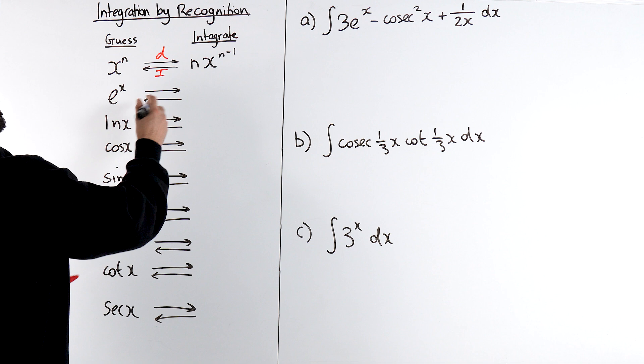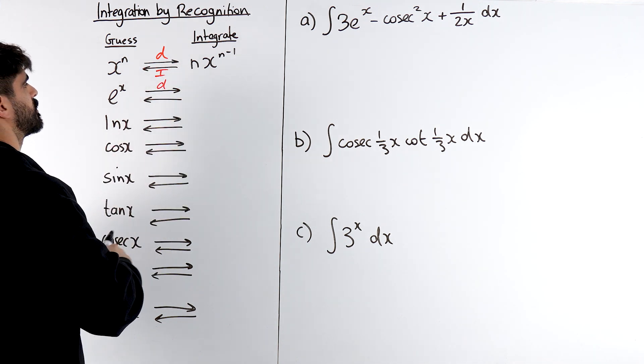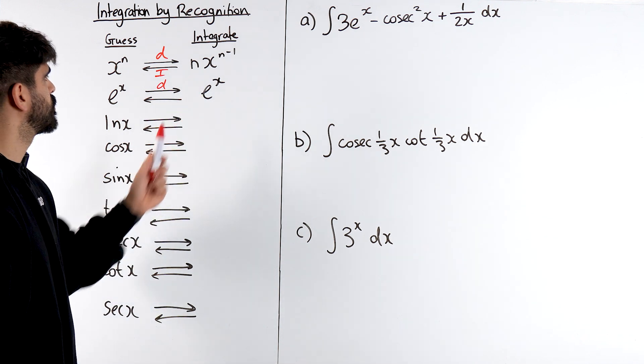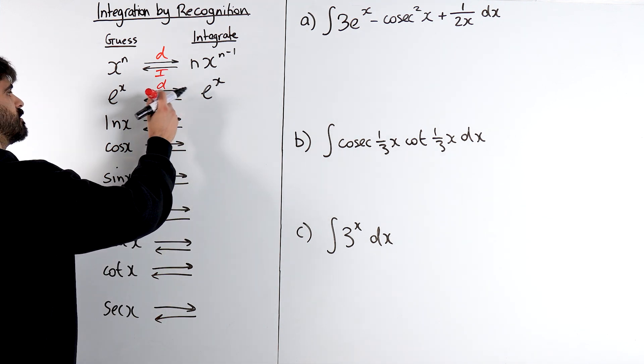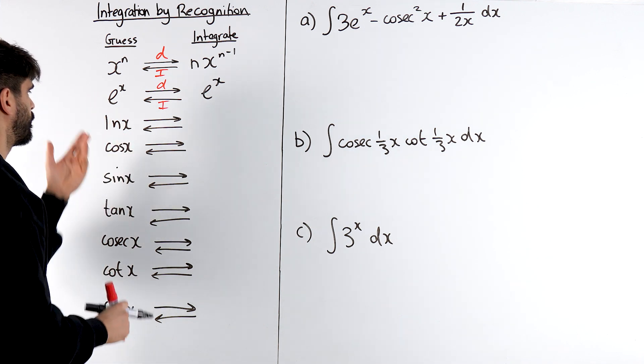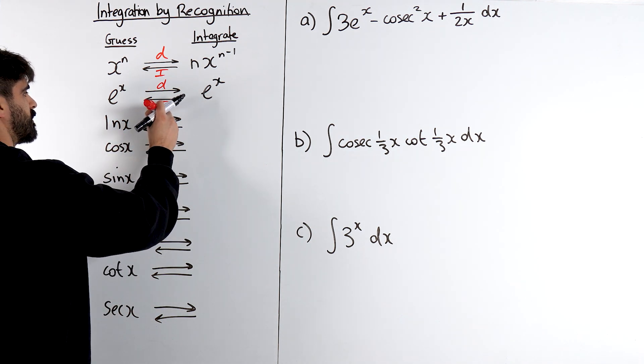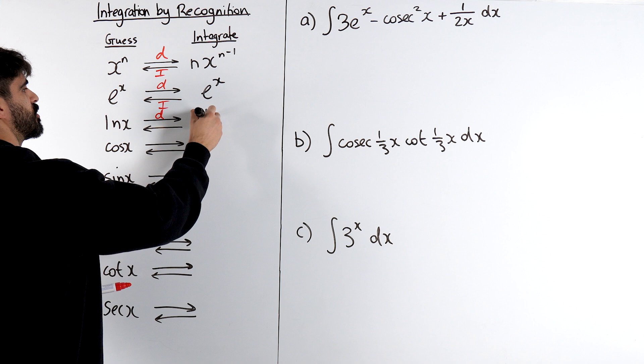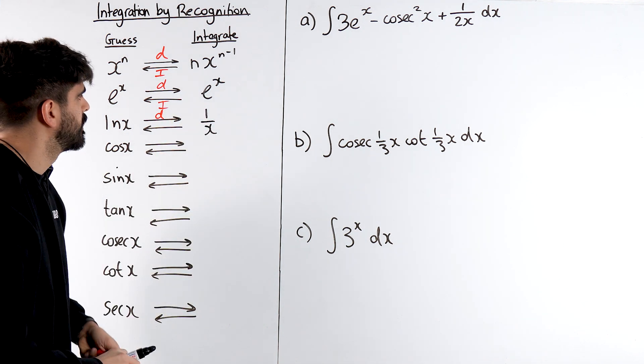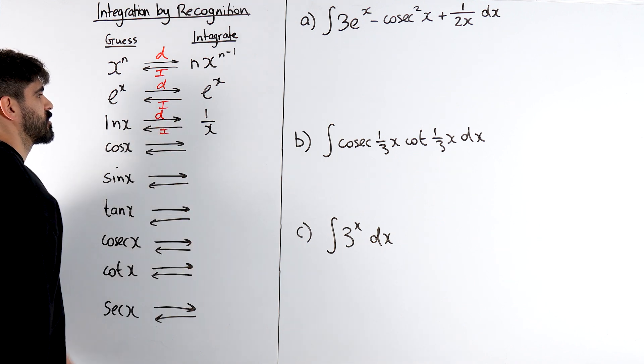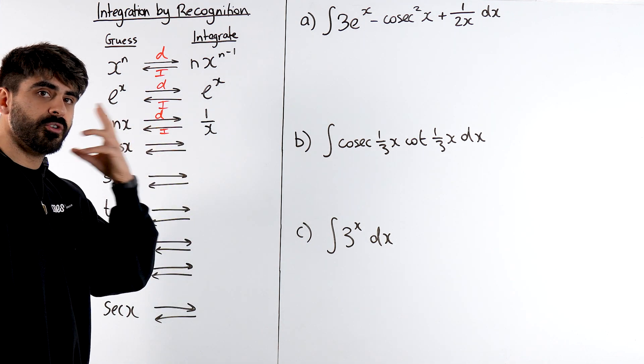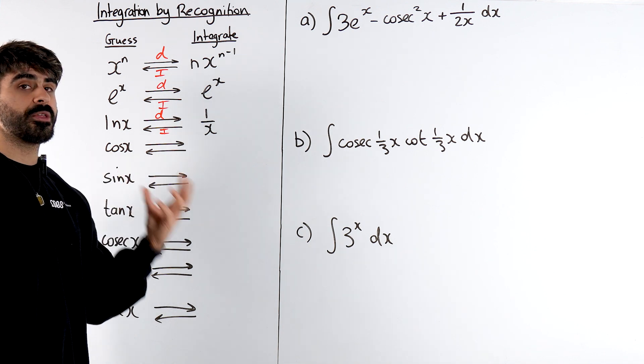e to the x differentiates to itself, which means if we want to integrate an exponential my guess is that it just integrates to itself. If we have ln x, it differentiates to 1 over x. So now if I have fractions my thought process is that it's going to integrate back to a ln x. If I see fractions I'm thinking about ln x.